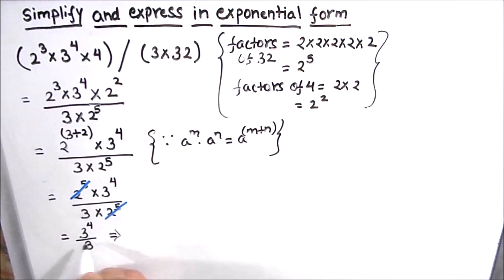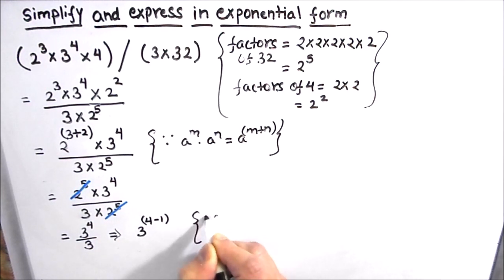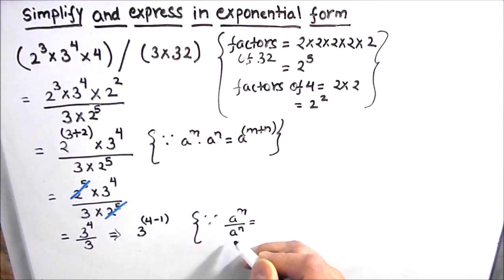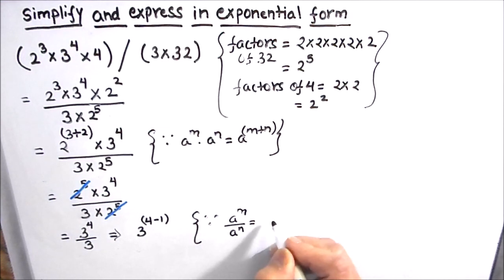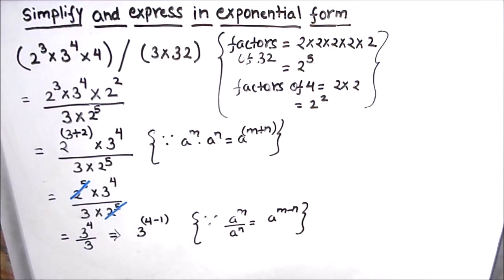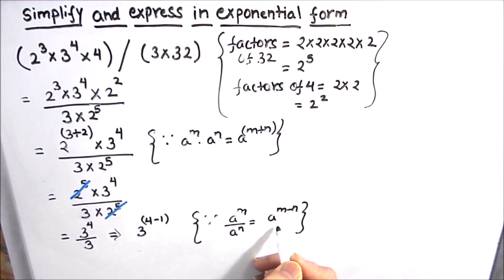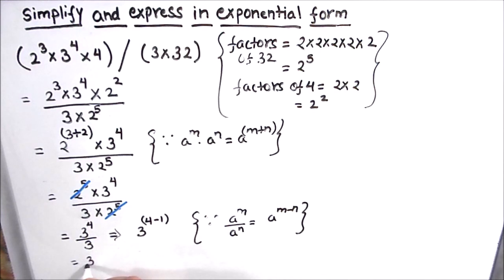This can be reduced to 3 raised to power 4 minus 1, using the exponential law where a raised to power m divided by a raised to power n — when the bases are the same and the numbers are divided, the powers get subtracted. Here the base is 3, the power in the numerator is 4 and in the denominator is 1, so we get 3 raised to power 3 as our final answer, which is in exponential form as required.